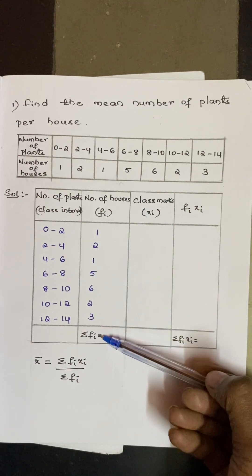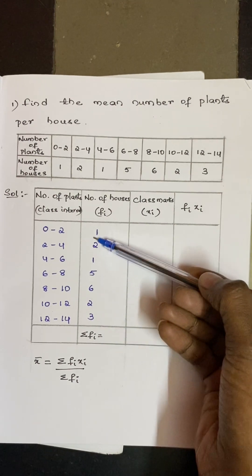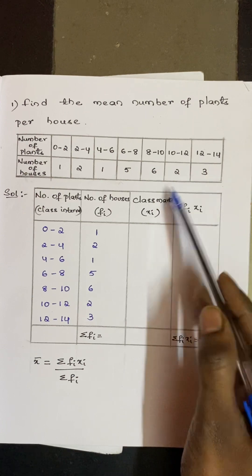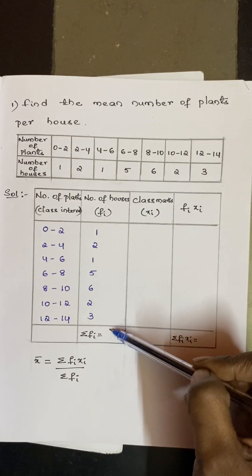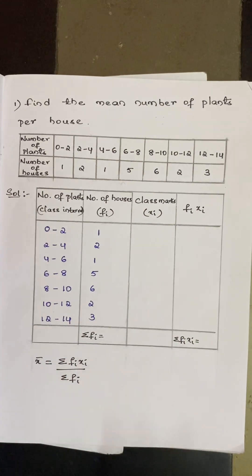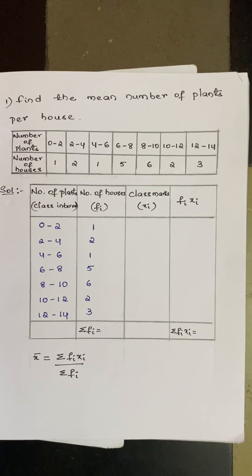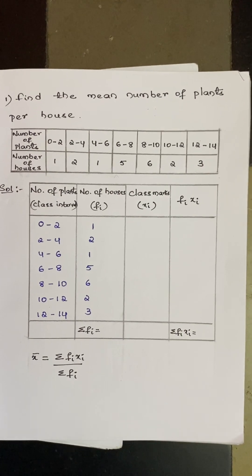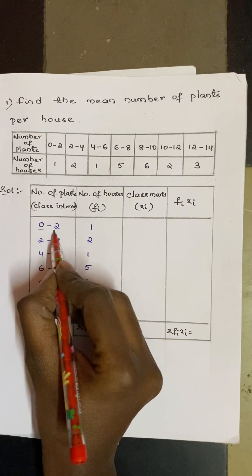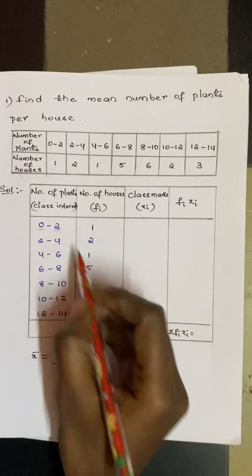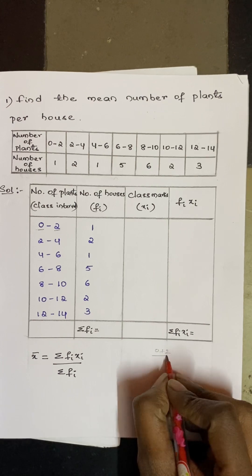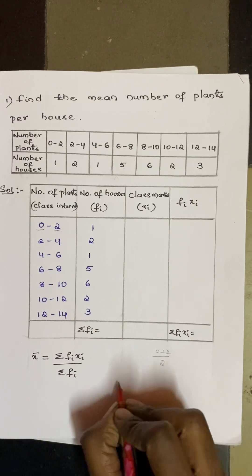Σfi is found by adding all the frequency values in the second column. To find the class marks, we add the two class boundary values and divide by two.